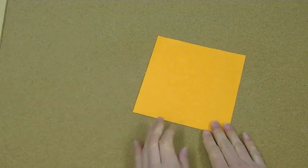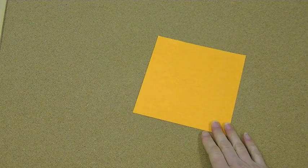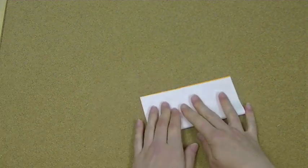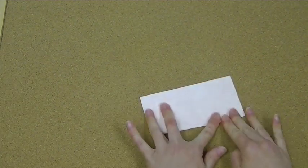So for this origami you just need one piece of origami paper. And what we want to do is start off with some basic creases in our paper, just our horizontal and vertical creases in our paper.